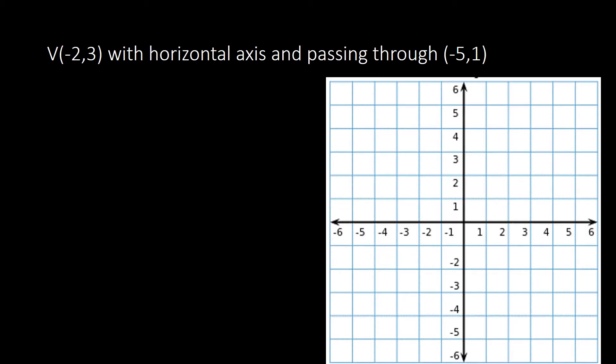For the second problem, the vertex is (−2, 3) with a horizontal axis, passing through (−5, 1). We plot the vertex at (−2, 3): X is −2 and Y is 3. This is our vertex.